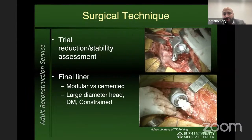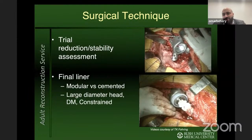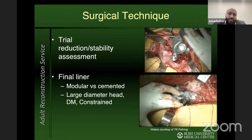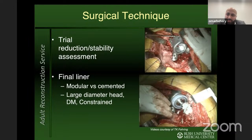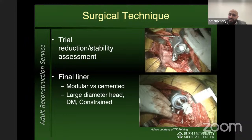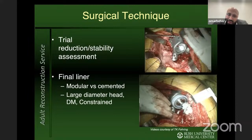At the end of screw insertion, if you have a modular liner, place a trial liner and check for stability. Then impact the final liner. If you have a modular locking mechanism and the cup is in good position — with appropriate anteversion and abduction — lock your final liner in. Alternatively, cement a large-diameter liner, a monoblock dual mobility cup, or a cemented constrained liner, depending on what you're solving in terms of instability risk.